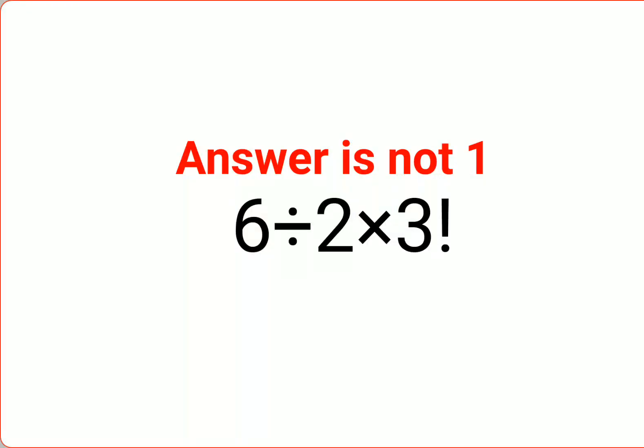Welcome everyone. So today we are going to understand why the answer for this question is not supposed to be 1. See, here we have 6 divided by 2 multiplied by 3 factorial.